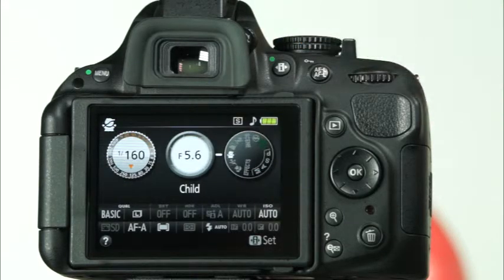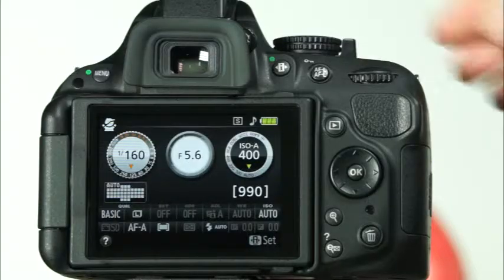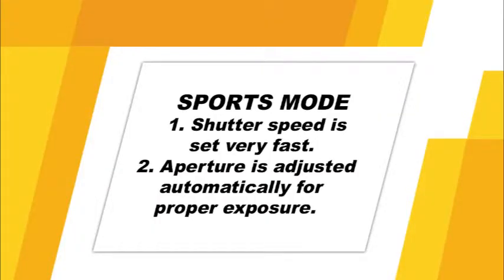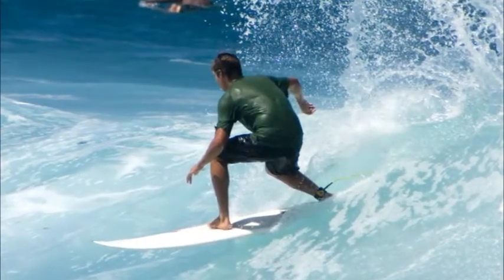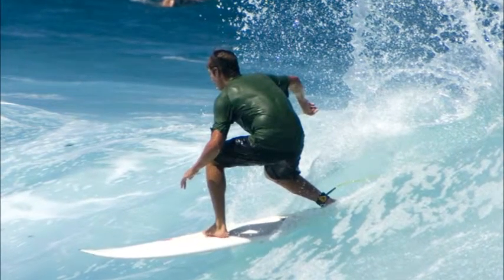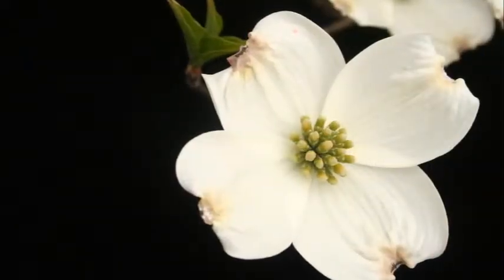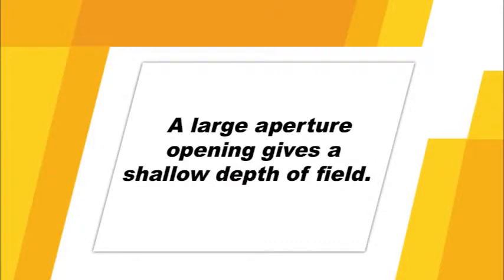The next mode is the child mode. This shooting mode is great for snapshots of children. The camera will capture bright and vivid colors, but keep skin tones natural. To capture fast-moving subjects, select the sports mode. When the sports mode is used, the camera will set a fast shutter speed to help freeze the action. A telephoto or long lens helps you get closer to the action and gives you a great range of focal length options. The last scene mode is the close-up mode. This shooting mode is great for capturing flowers and other small objects that are physically close to the camera lens. This mode tells the camera to use a large aperture opening to provide a shallow depth of field. Use this at the lens's minimum focusing distance.